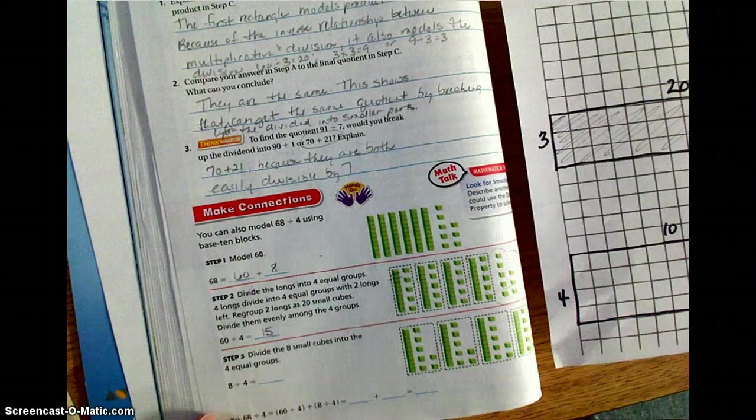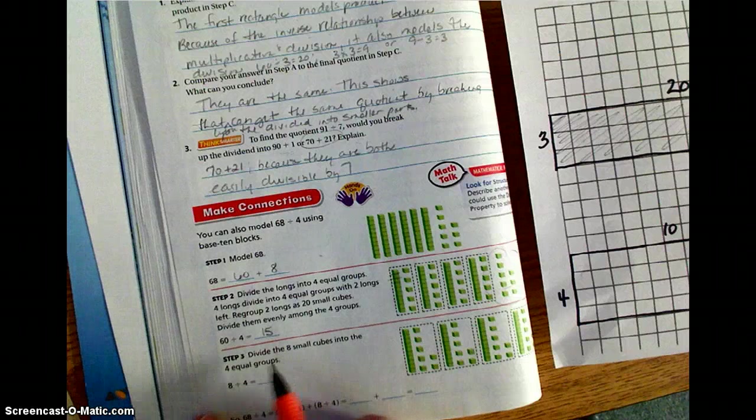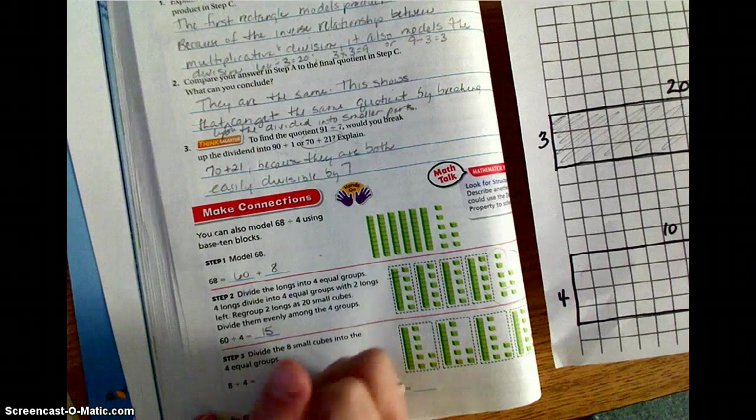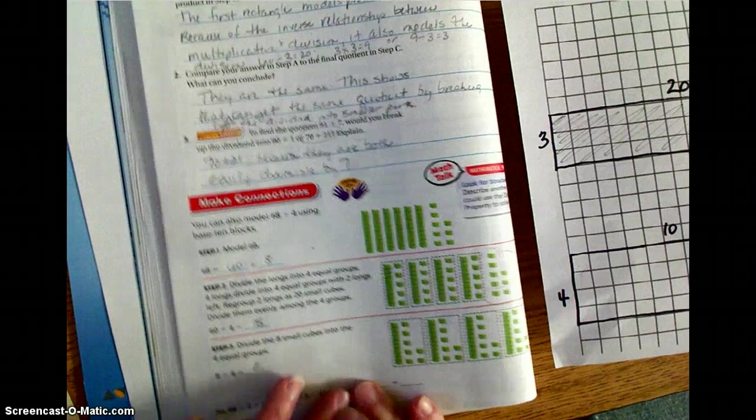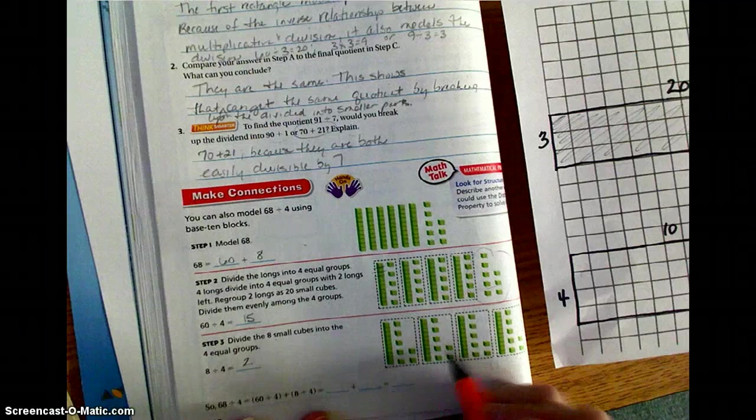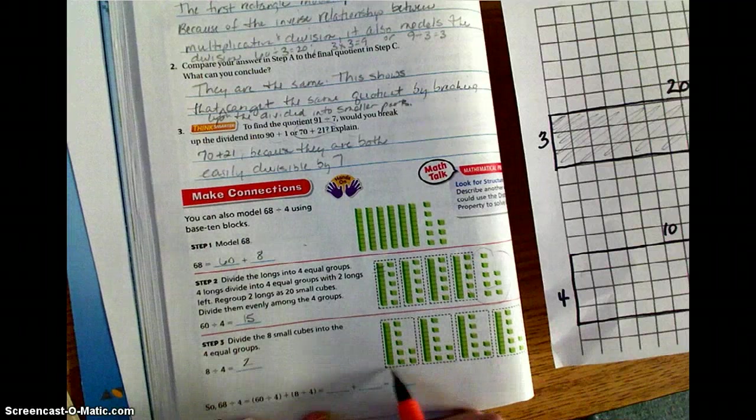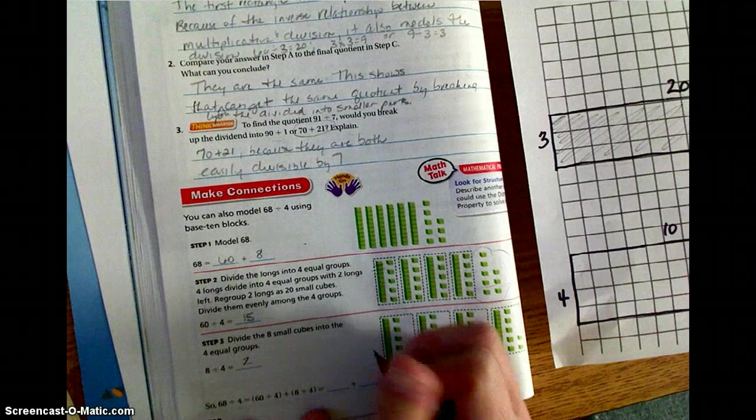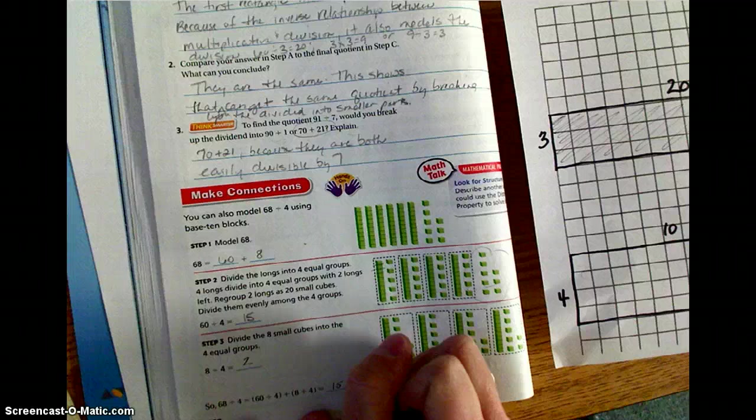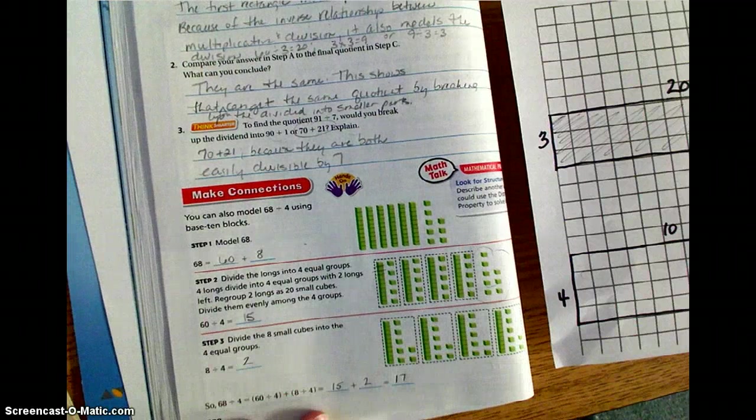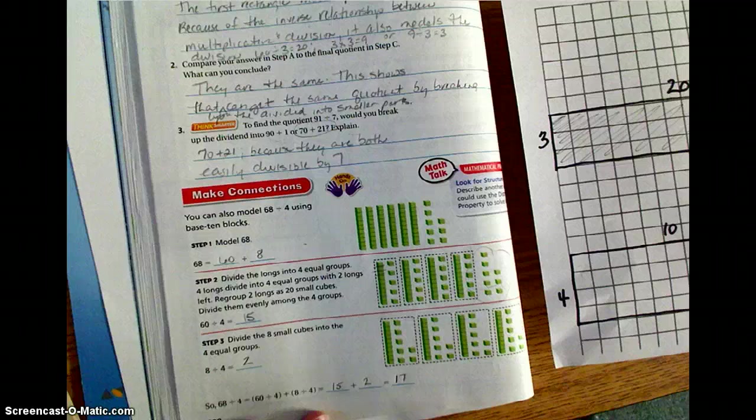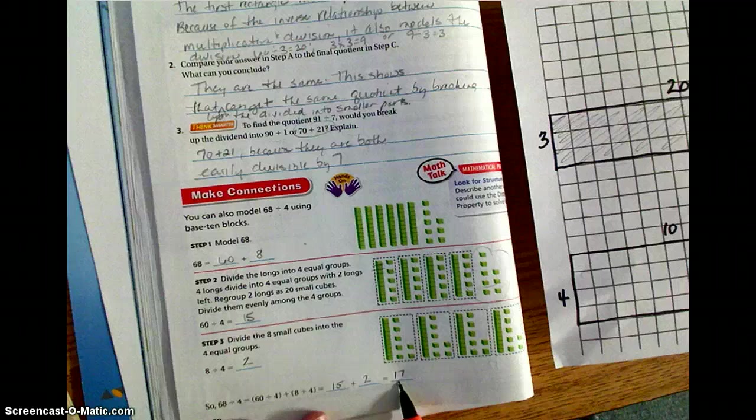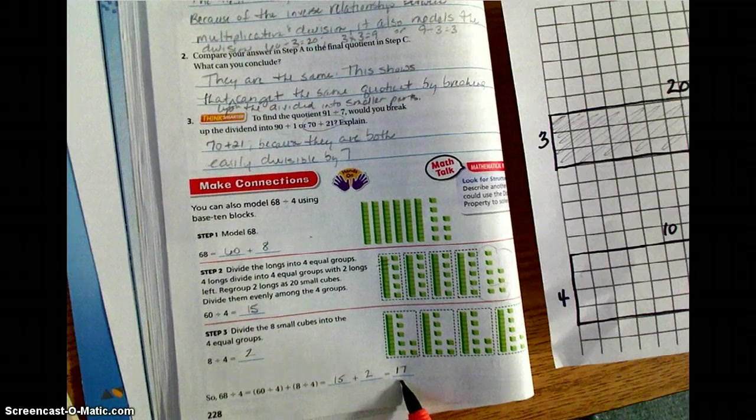This is what we currently have left over, that we're going to divide in just a second. Then, it wants us to divide the 8 small cubes into the 4 equal groups. So 8 divided by 4 is 2. So now, if we would count the total in each group, we're going to have the 15 that I told you about, add 2 more. So it's going to be 17. So we have 15 plus the 2 we added is going to be the 17. So then we can go back to our original problem, and we know that 68 divided by 4, we get a quotient of 17.